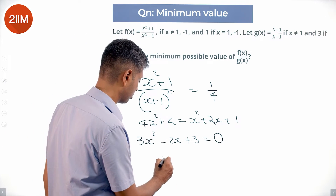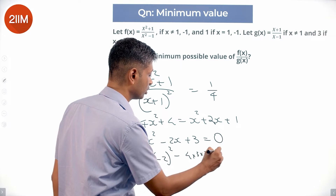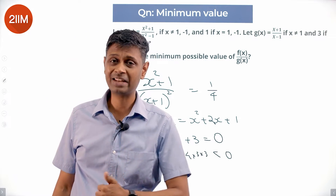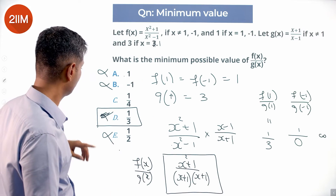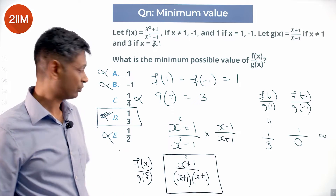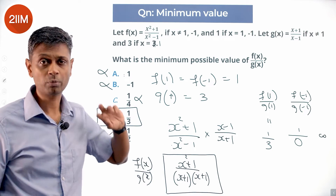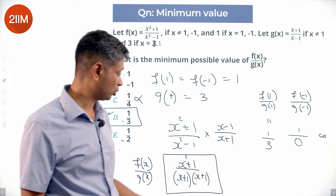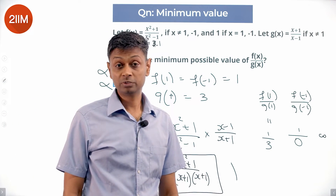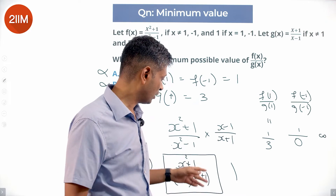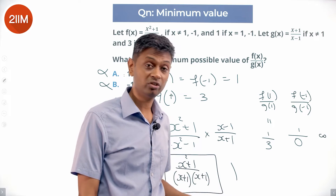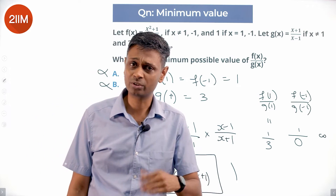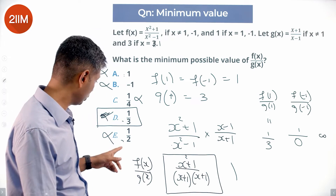The discriminant is b² - 4ac = (-2)² - 4(3)(3), which is negative. So the equation has no real roots — the expression can never equal 1/4. Since I already have 1/3, and 1/4 is unachievable, the minimum possible value is 1/3. The textbook method would be to equate to k, require discriminant ≥ 0, or differentiate — doing that gives 1/2, which is wrong.